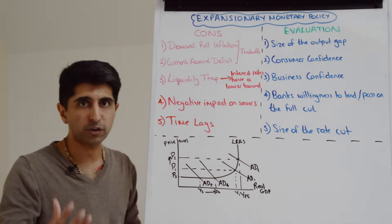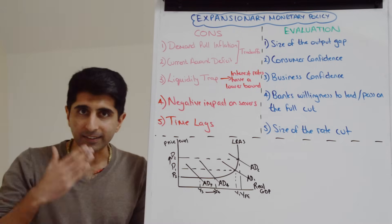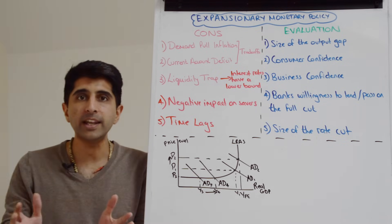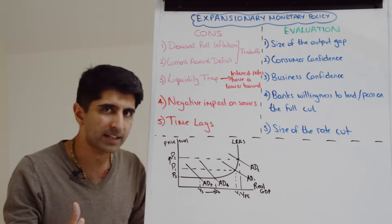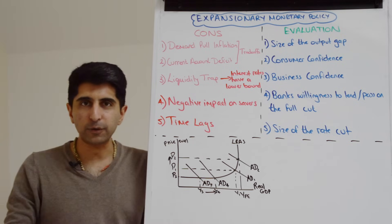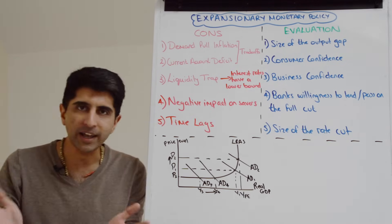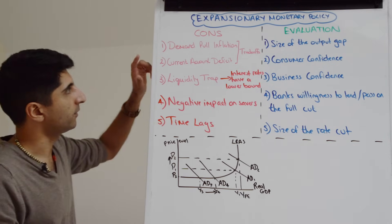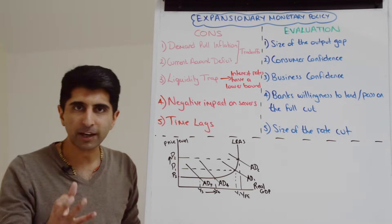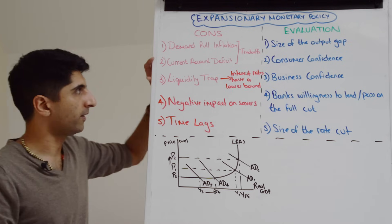So here we have a conflict of macro objectives that might not be desirable. At the same time, lower interest rates that stimulate aggregate demand could well widen a current account deficit, a trade deficit, and that is because as there is more growth in the economy, incomes will be rising and households will be sucking in imports, spending more of their income on imports, and that could widen a country's current account deficit. So we have a couple of trade-offs of macro objectives that we don't necessarily want when we use expansionary monetary policy.